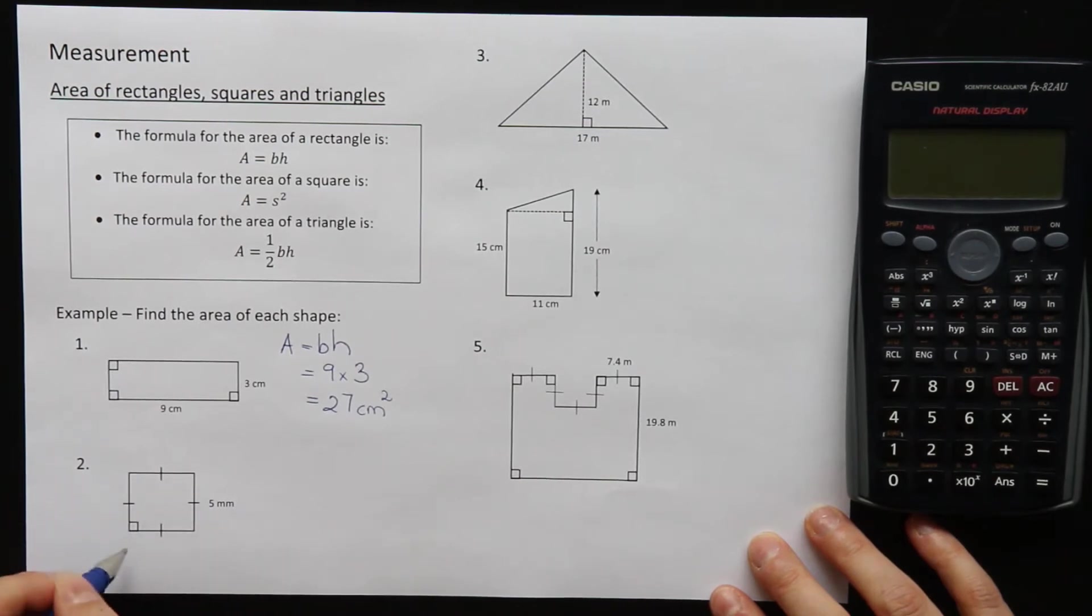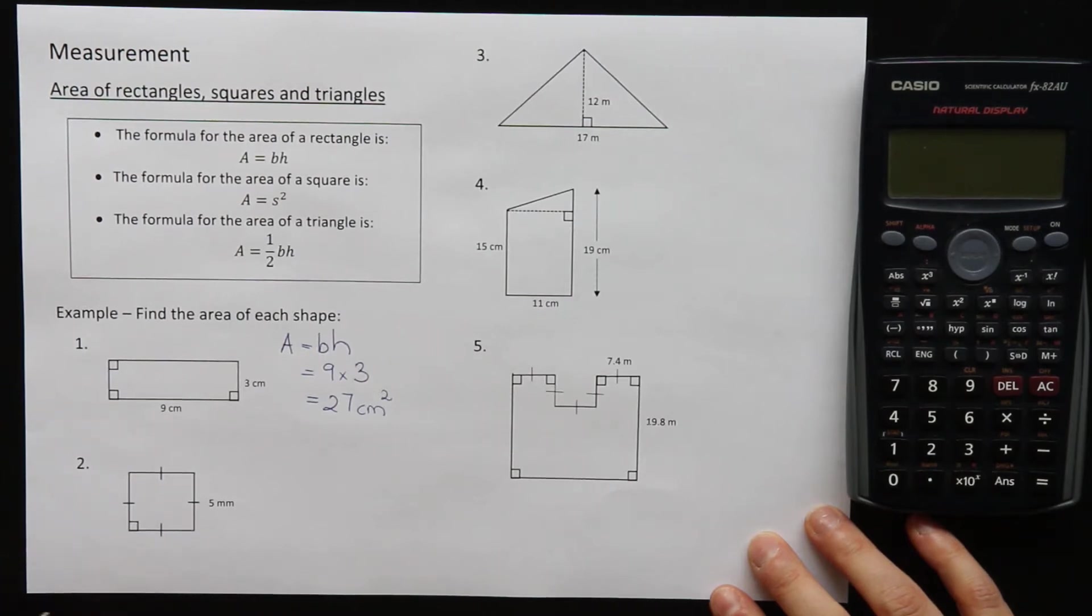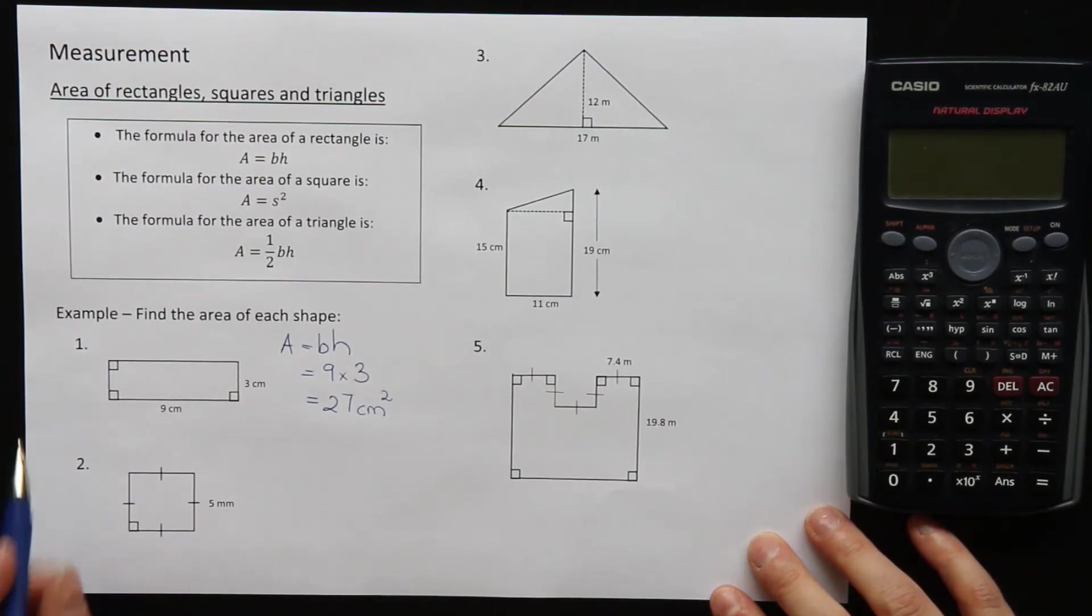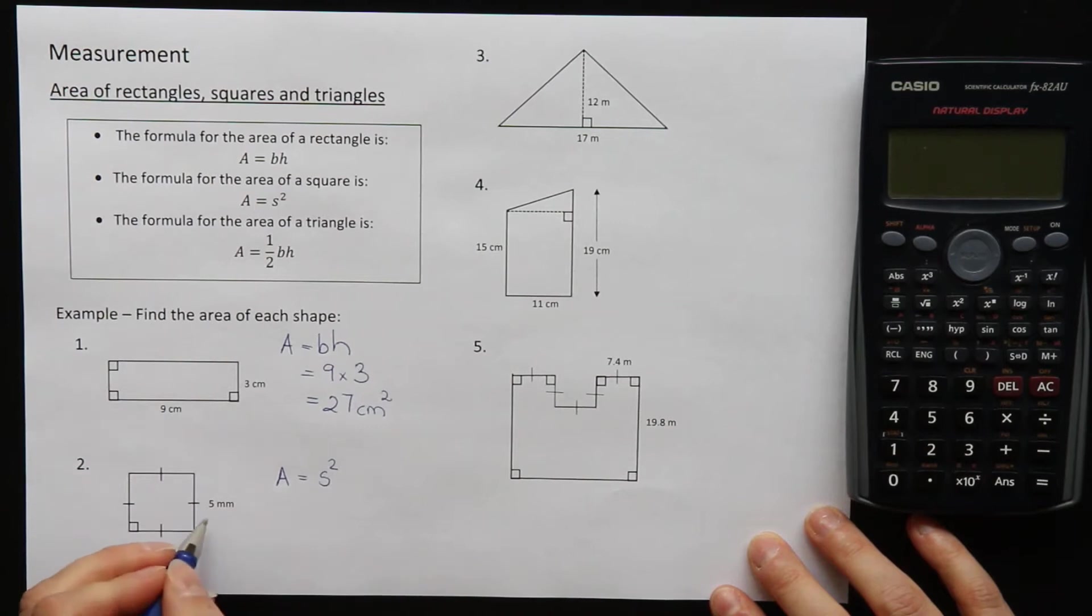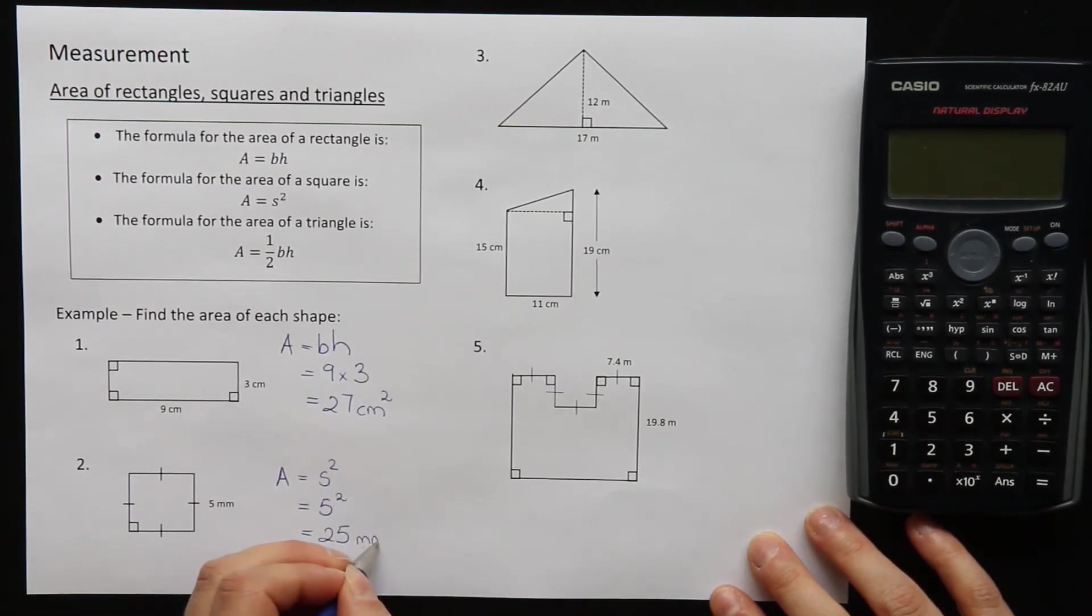Question 2. This time our shape is a square. These lines tell us that all the sides are the same length and the right angle tells us that it's a square. So the formula for the area of a square is A is equal to S squared, where S is the side length. The side of my square is 5 millimeters long, so I have 5 squared, which is equal to 25. And I include the units. The units are millimeters, and when we're doing area, millimeters squared.